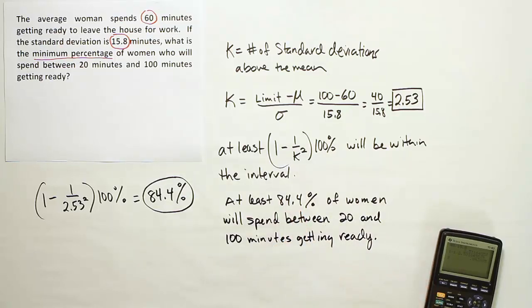Okay, that's the minimum percentage. It could be a lot higher. It could be up to 100% because it says at least 84.4%. So it could be as high as 100% or as small as 84.4% or any percent in between. But that's the minimum percentage you find within that range from 20 to 100 minutes.